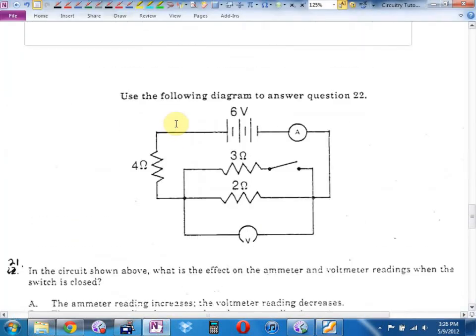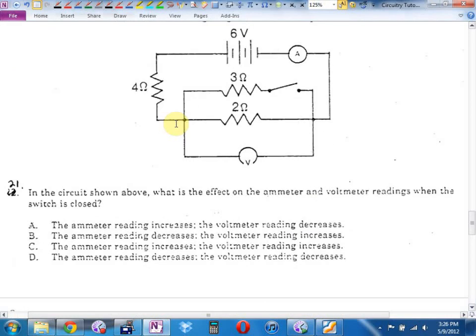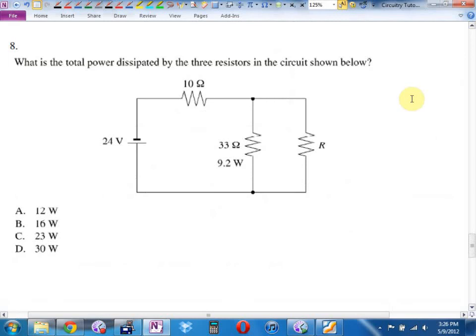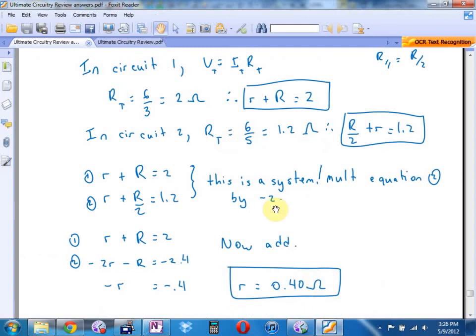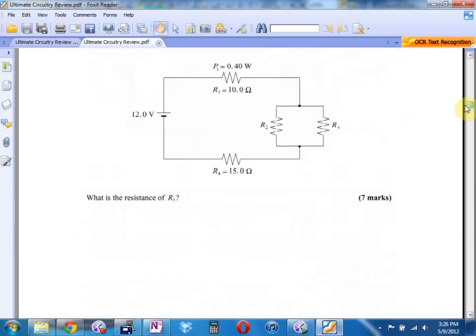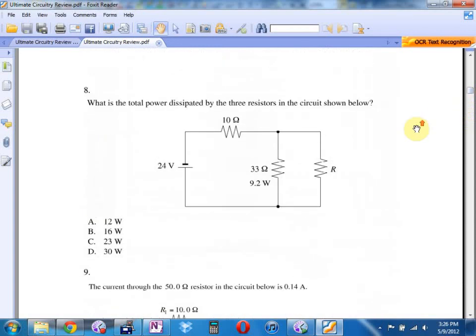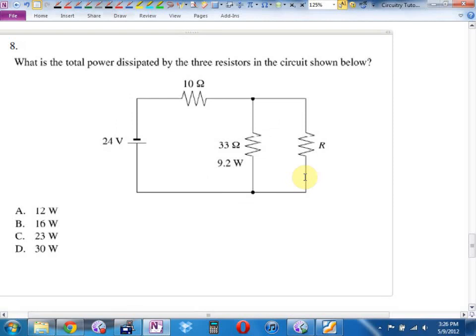This is little r. I found the parallel was r over two. That has to add to 1.2. So I ended up with those two equations. r plus big R equals two. r plus r over two of 1.2. This is a system. This is well beyond what you're going to be asked. So somebody must have asked me this one last year. So if you're freaking out about this one, don't. But it's nearly cool. What else did I go over last year? No, this is better. What power is dissipated by the three resistors in the circuit shown below? Is this actually number eight from your review? It is?